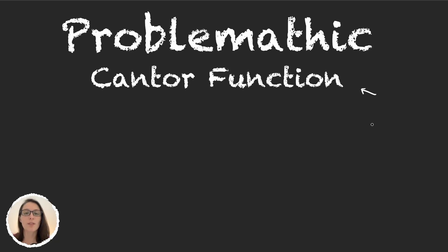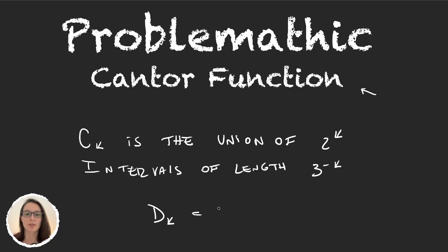If you haven't already, I recommend you check out the video on the Cantor set construction. So what we did essentially was on each step k we had a set c_k that was the union of 2^k intervals of lengths 3^(-k). Now what we will do is call d_k the complement of these c_k's in [0,1].